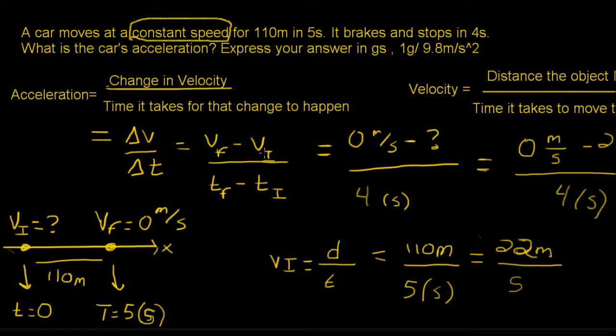Now, we don't know the initial velocity. It just says a car moves at a constant speed of 110 meters in 5 seconds. But we do know the final velocity because it breaks and stops in 4 seconds. So we're going to write that out here as the change in velocity. So our final is going to be 0, and we're going to solve for v_i because we have our time it takes for that change to happen.